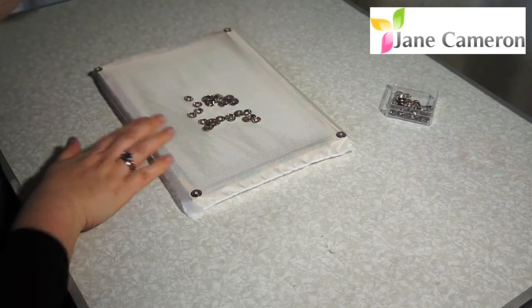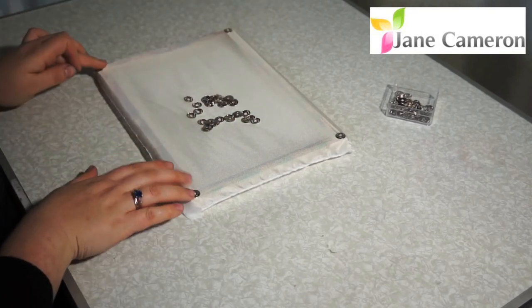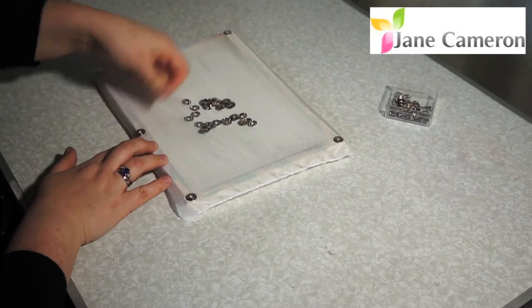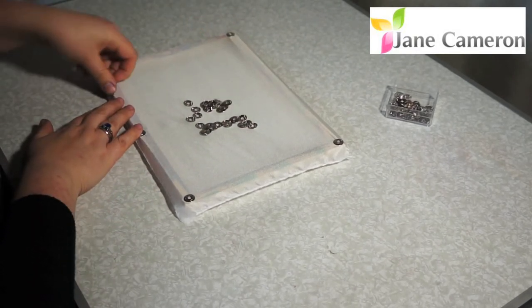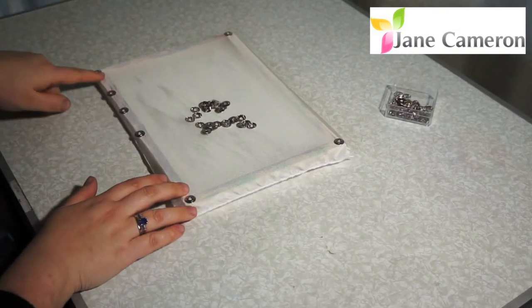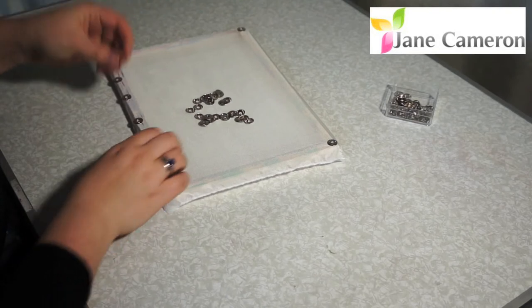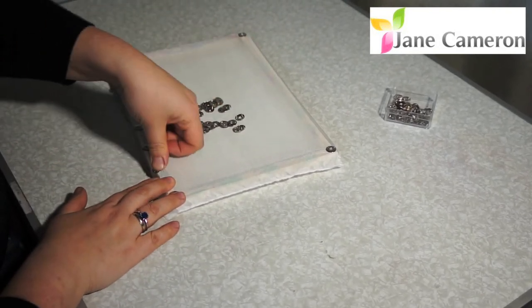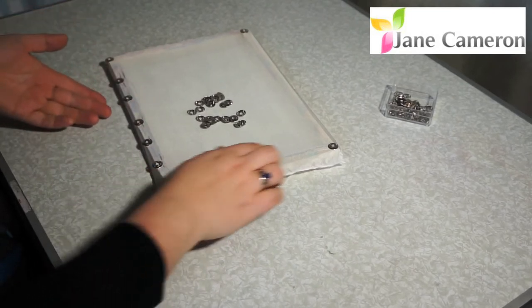Now, long sides. Make sure that this is running evenly between the two pins and press. Add another two pins so that they're approximately at one and a half inch intervals. Again, do the same on this side. There we go, and turn it round.